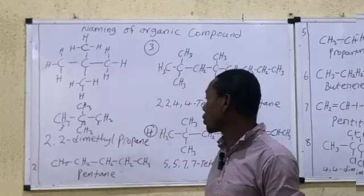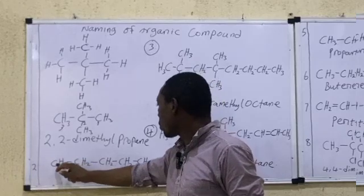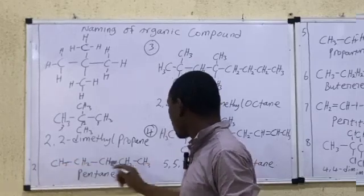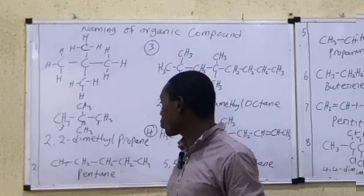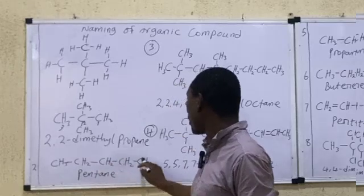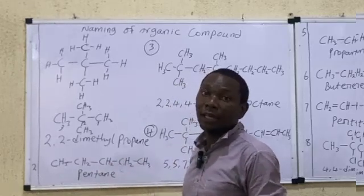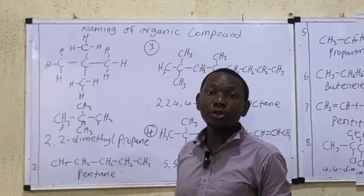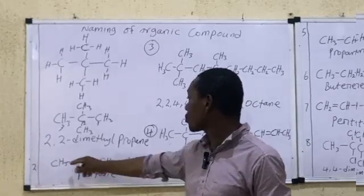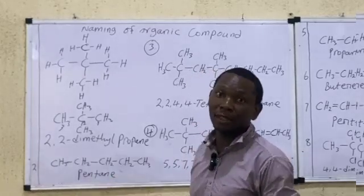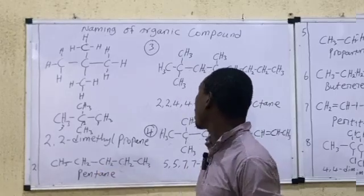Let's quickly go through the next compound. This is a straight chain. Counting gives us 5 carbons. The functional group is a single bond. So the 5th compound in the homologous series of the alkane — the 5-carbon straight chain — is pentane.